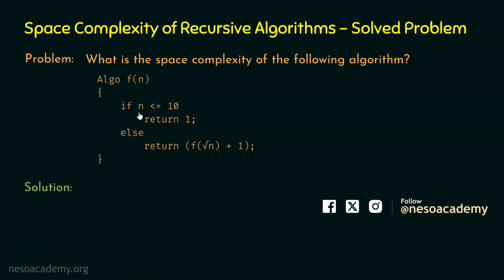The solution to this problem is simple. We want to find the space complexity, and we learned in our previous lectures that in order to find the space complexity, we need to know two things: one is the space required for any complex data structure we are using, and second is the depth of recursion.